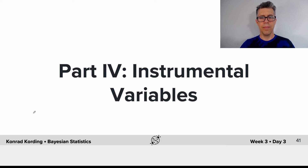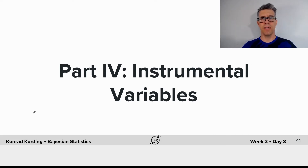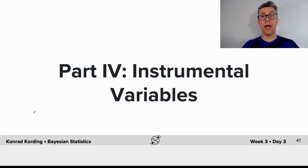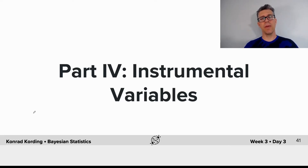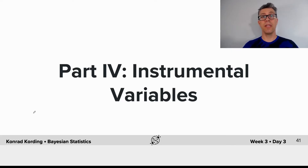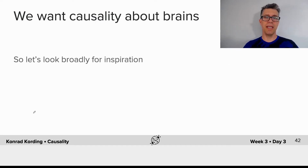It is time for part four: instrumental variables. Instrumental variables are one of the techniques that people in neighboring disciplines like econometrics use to really get at causality if they cannot randomize things.